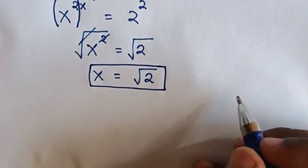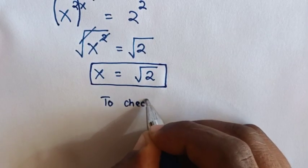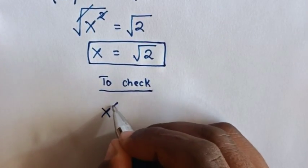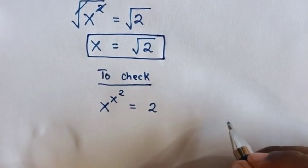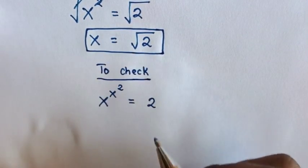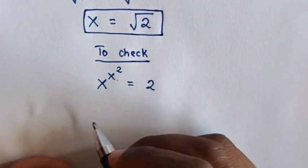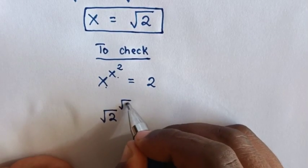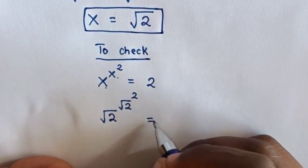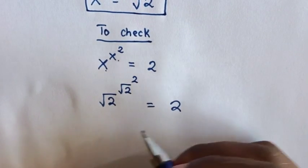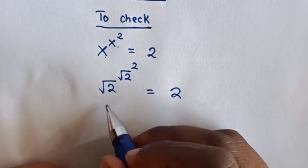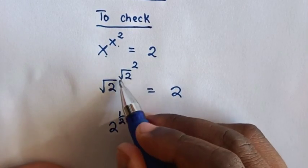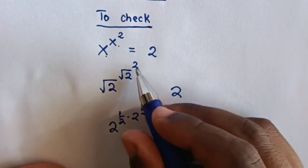Now, to check if our answer is correct, we check from our problem, which is x power x power 2 is equal to 2. We substitute the value of x, which is square root of 2, in here and here. So from here, square root of 2, power of square root of 2, power of 2, is equal to 2. Then square root is the same as power of 1 half, then times 2. Square root is also power of 1 half, then times 2.